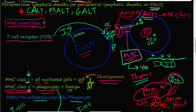After destroying them, phagocytes display what's left — like a head, an arm, or a leg, if you will — to the T-cells. This displayed piece is called an antigen. The T-cell then has the responsibility of warning or alerting the immune system if something foreign is present in your body.